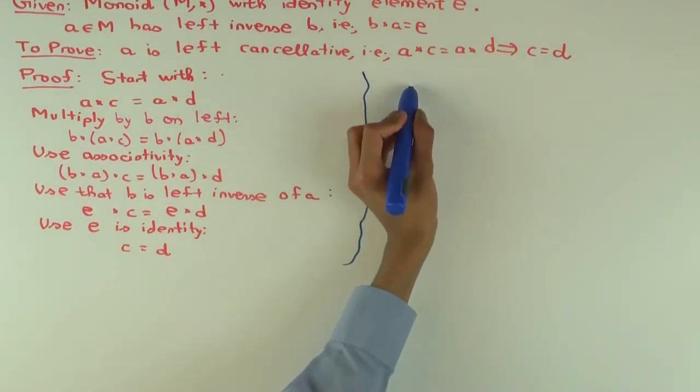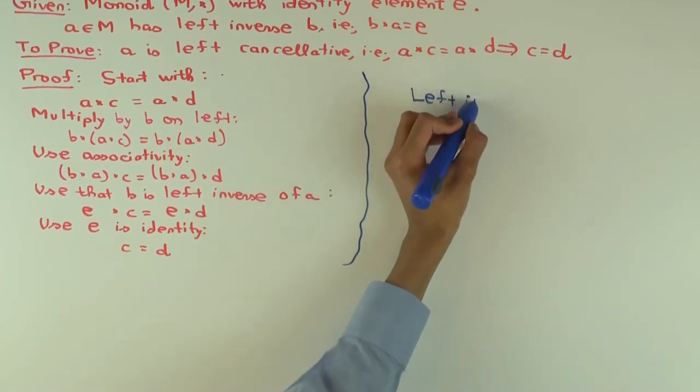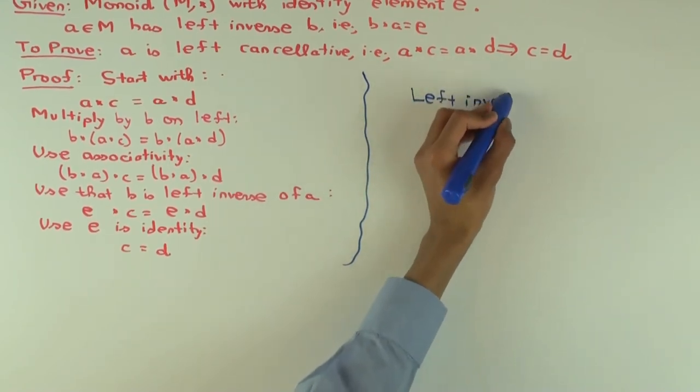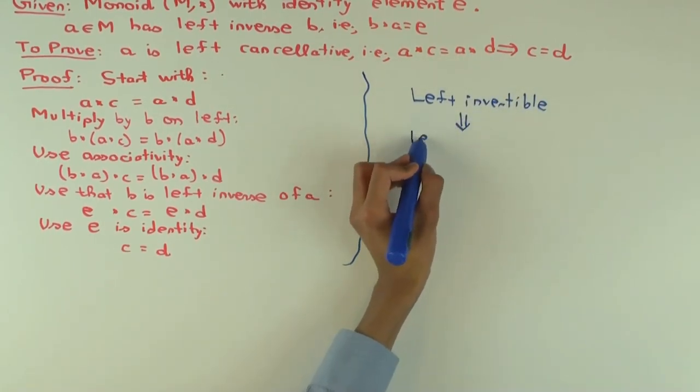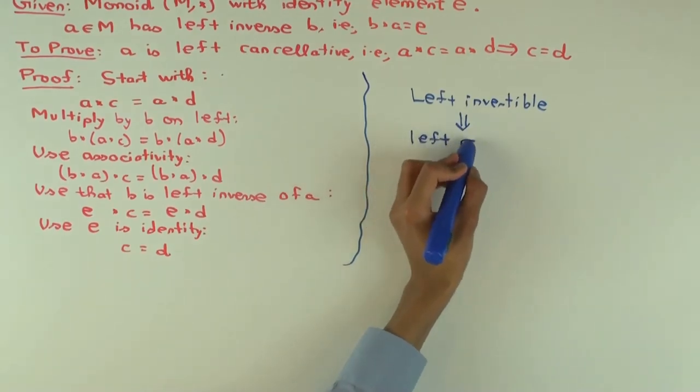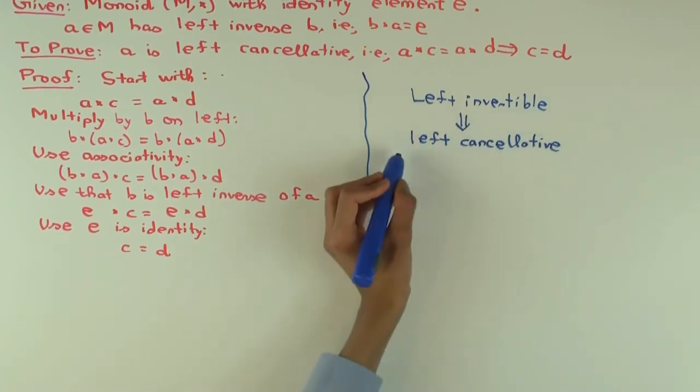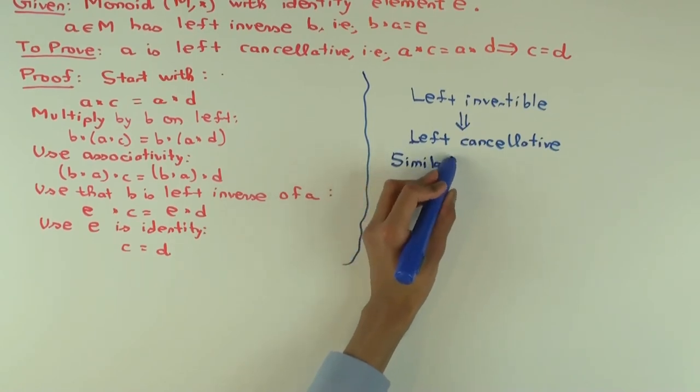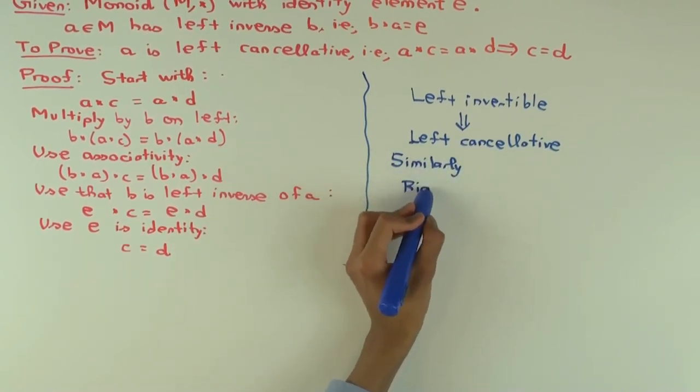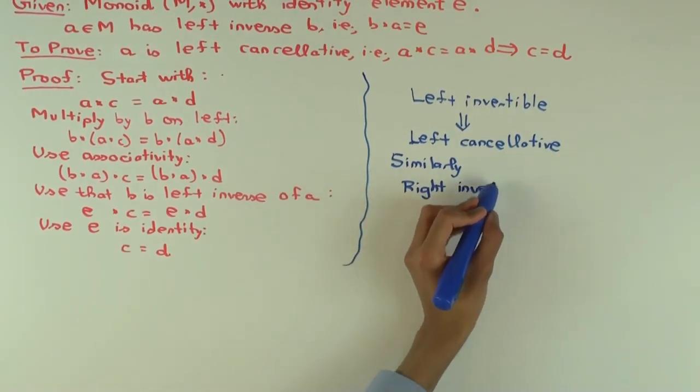We proved that left invertible implies left cancellation. So any element that's left invertible, you can cancel whenever it appears on the left. What would a similar thing be for the right side? Right invertible implies right cancellation.